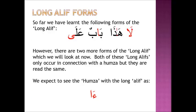So far we have learnt the following forms of the long Alif, as in: La, Hadha, Baab and Ala. However there are two more forms of the long Alif which we will look at now. Both of these long Alifs only occur in connection with the Hamza, but they are read the same. We expect to see the Hamza with the long Alif as A.